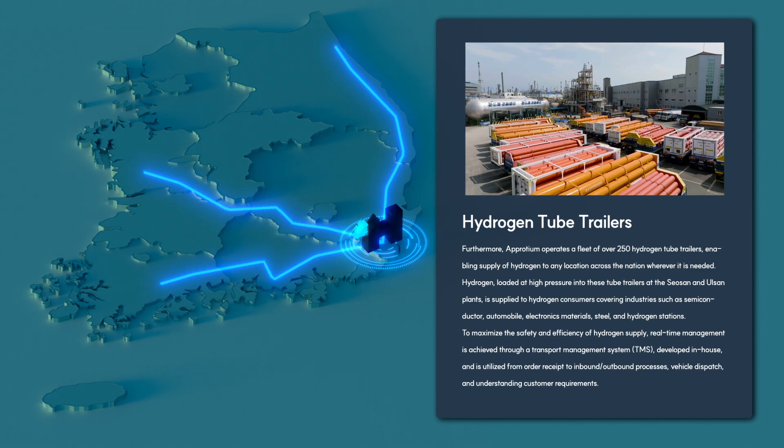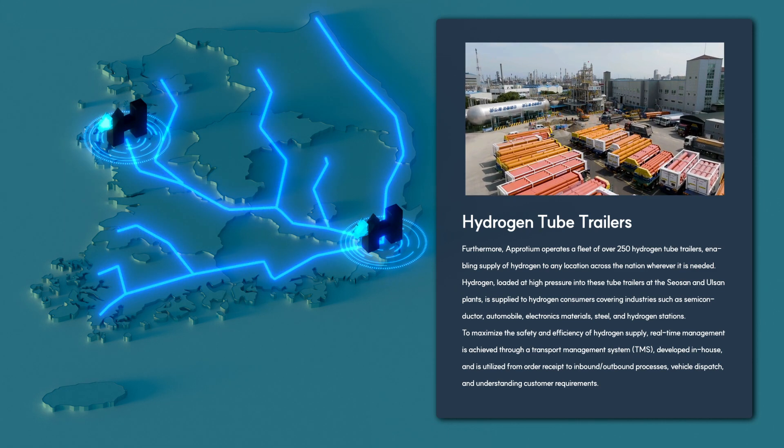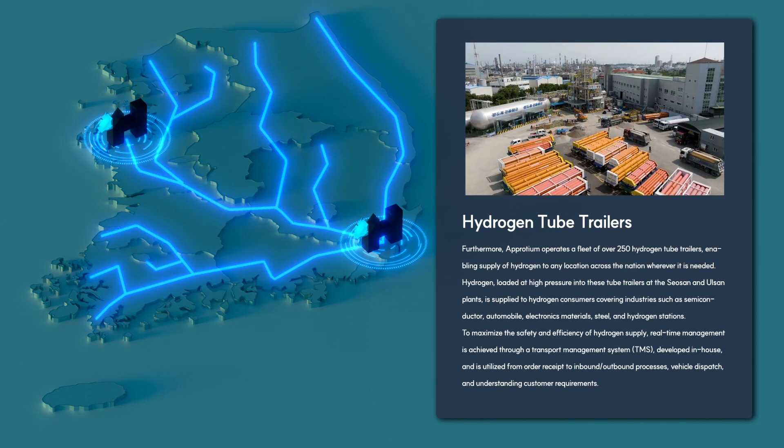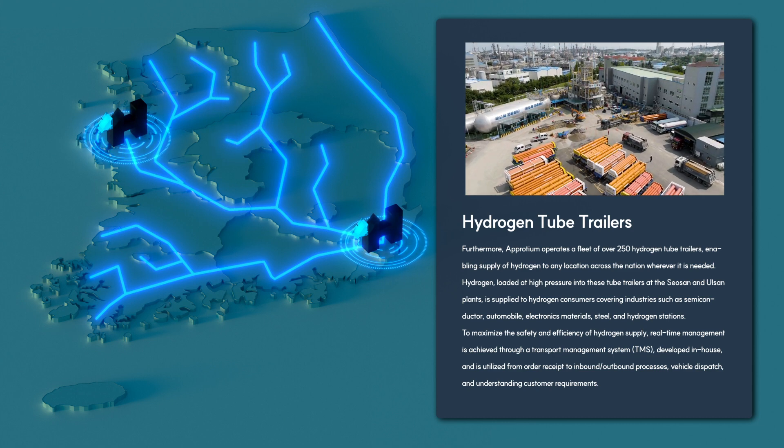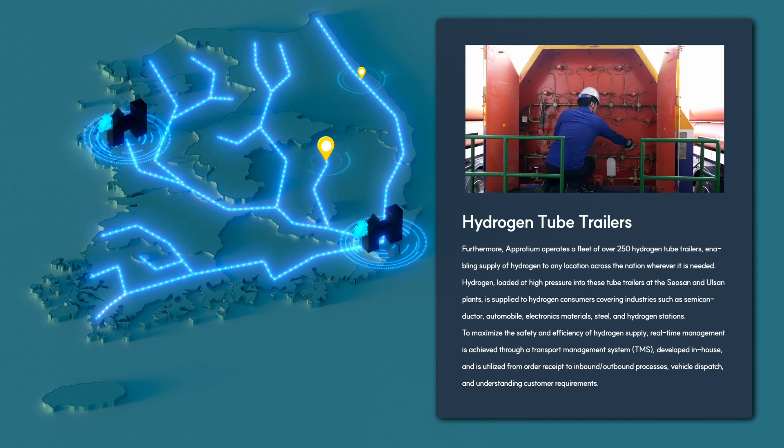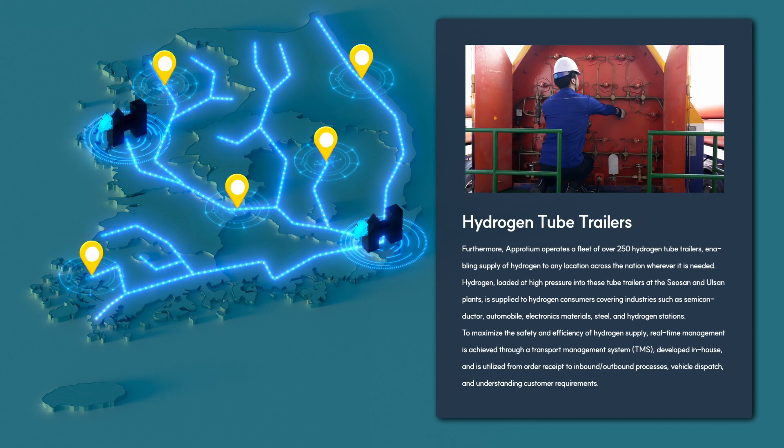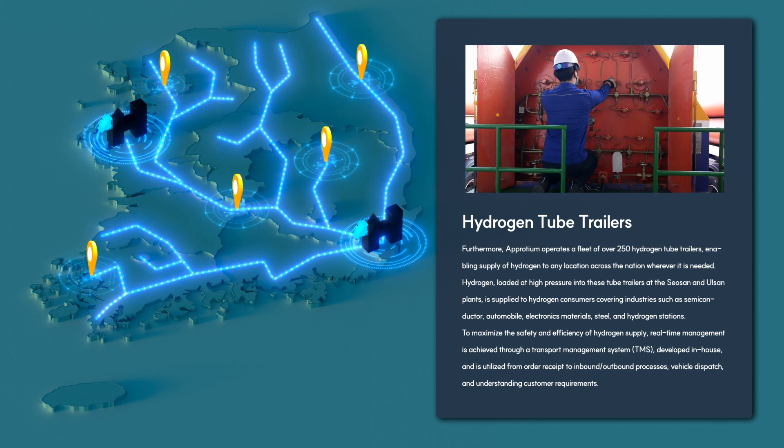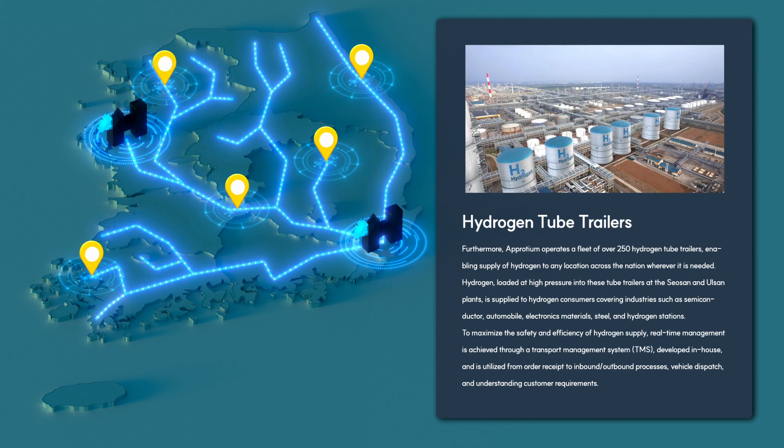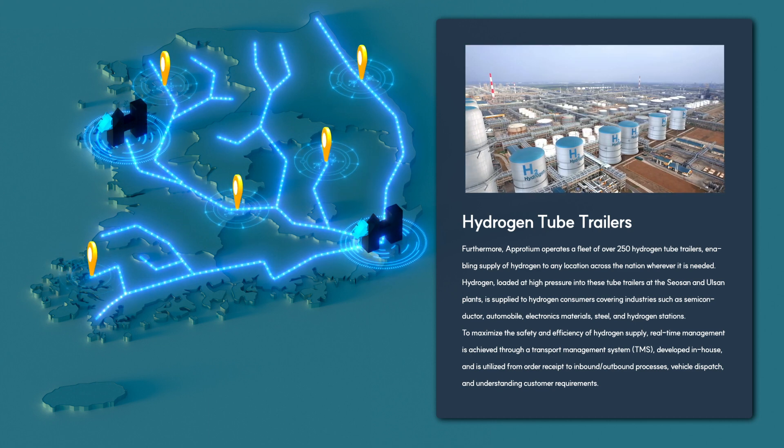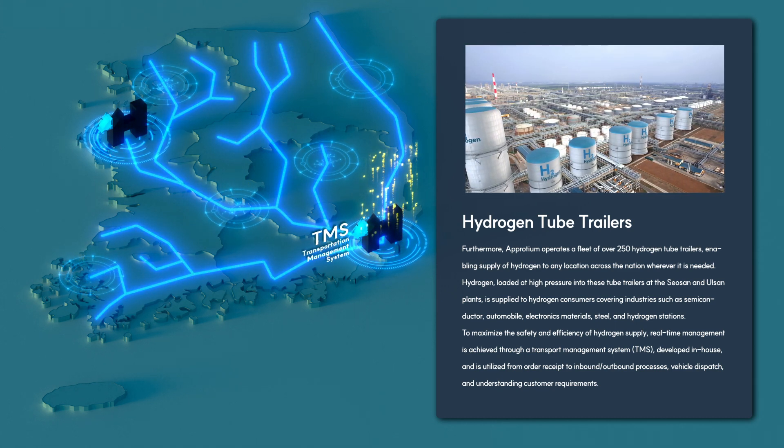Aprodium operates a fleet of over 250 hydrogen tube trailers, enabling supply of hydrogen to any location across the nation wherever it is needed. Hydrogen loaded at high pressure into these tube trailers at the Sosan and Ulsan plants is supplied to hydrogen consumers covering industries such as semiconductor, automobile, electronics materials, steel, and hydrogen stations.